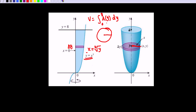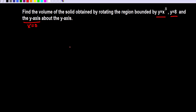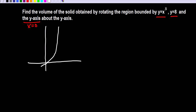Let's sketch the rough region. y equals x cubed passes through the origin and goes up this way. y equals 8 is a horizontal line at 8. The y-axis is x equals 0. Basically, this is our region and we want to rotate it about the y-axis.